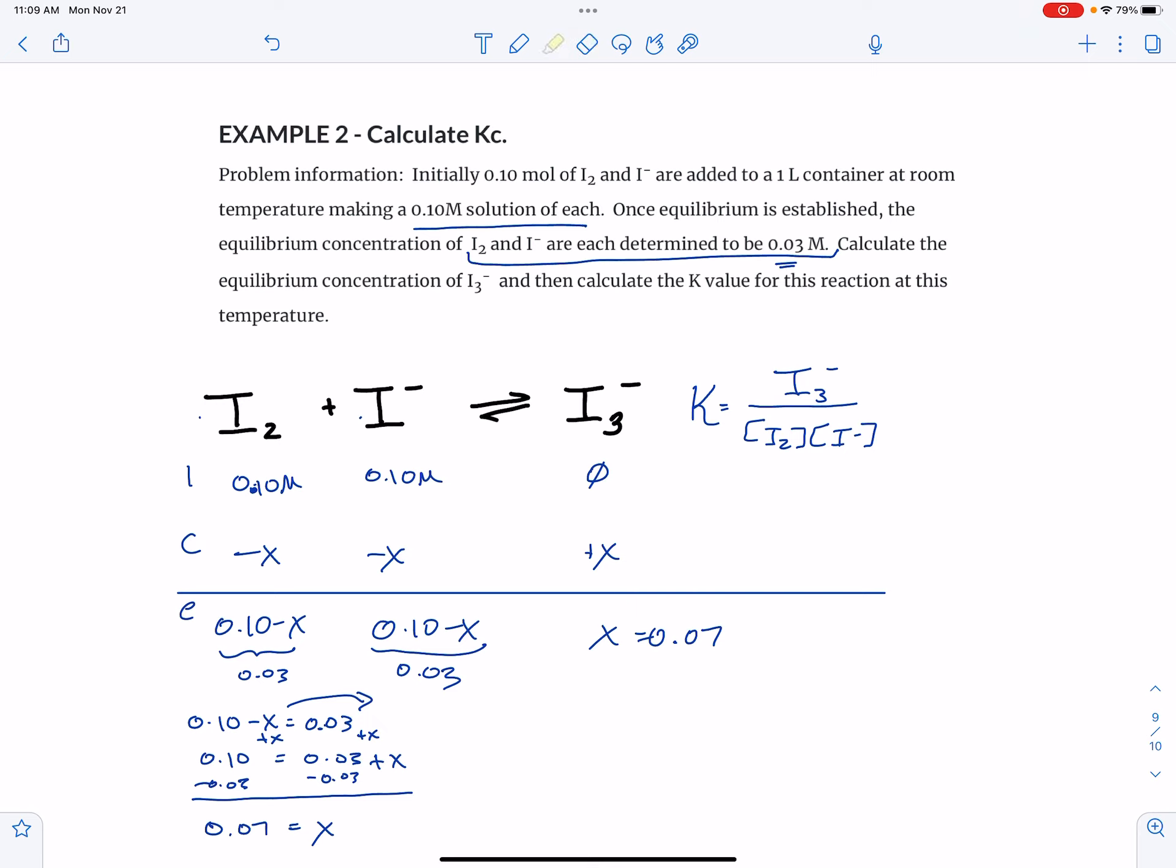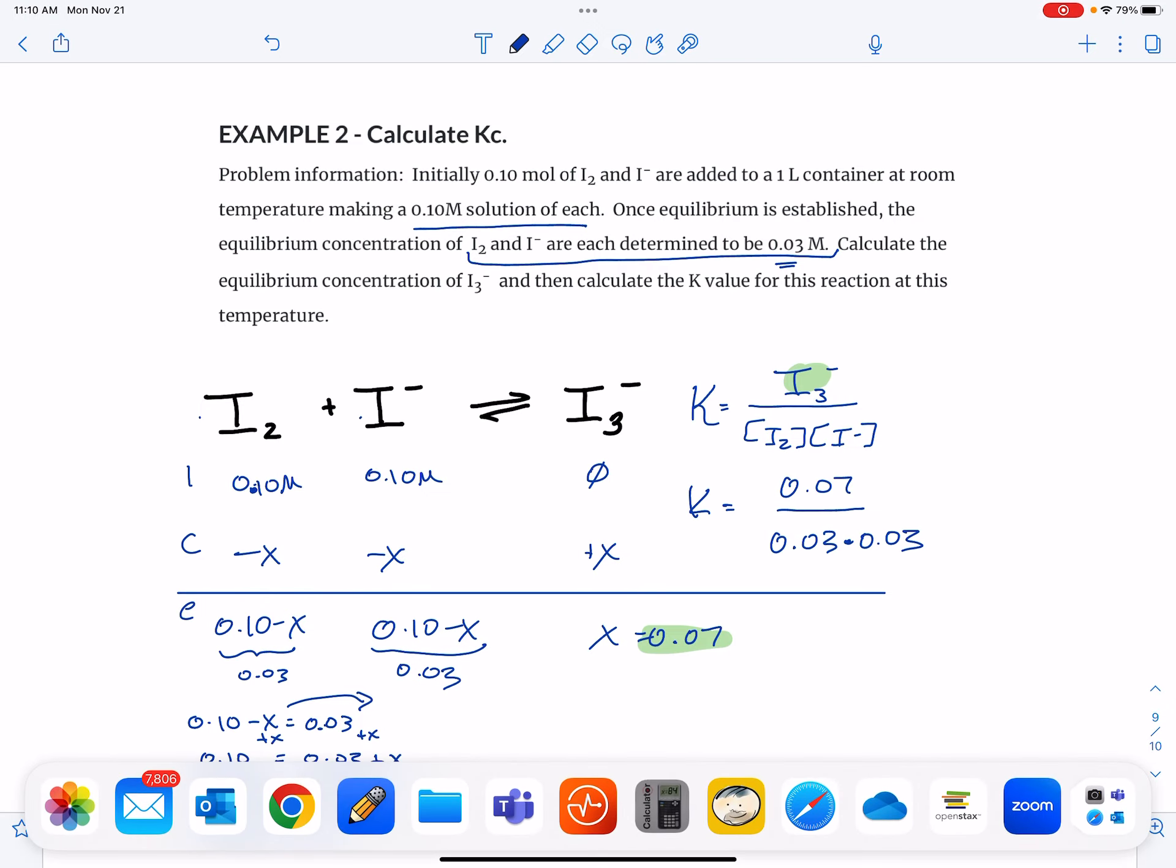That's going to be my I amount right there. And so I'll have K is equal to 0.07 over 0.03 times 0.03. Bring over my calculator.